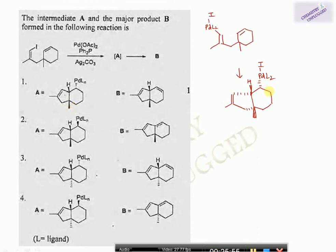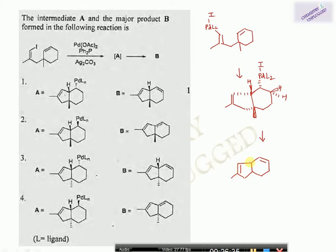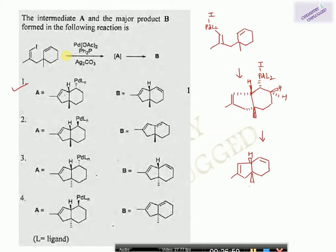For the beta-hydrogen elimination, which must also be syn: at the beta carbon, one hydrogen is above the plane and one is below. Since palladium is below the plane, it is removed with the hydrogen below the plane, giving a double bond at that position. The final product has the double bond at this position with the methyl group and the hydrogen both above the plane — this is option one, which is your correct answer. This concludes the Heck reaction; the next video will cover other organometallic reactions.